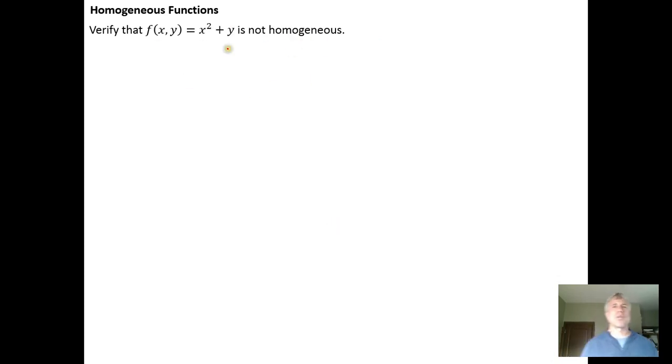And the last example we want to show that this isn't homogeneous, so to do that we replace the x with xt and the y with yt. We substitute into our equation so we'll get xt quantity squared plus replace the y with yt. So this is just x squared t squared plus y times t.